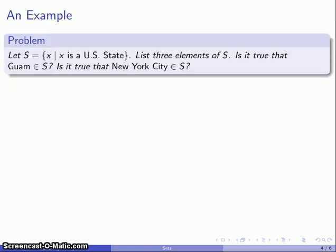Let's take a look at a couple more sets. Let S = {x | x is a U.S. state}. A useful thing to do is to start by listing three elements of S—that'll give us a handle on what S looks like. Then let's see if we can answer a few questions: Is Guam an element of S? Is New York City an element of S?